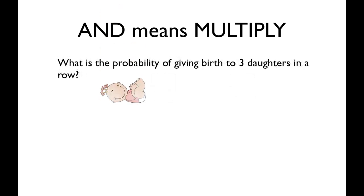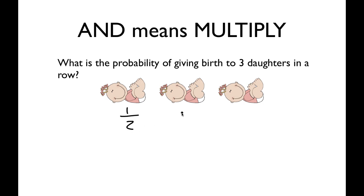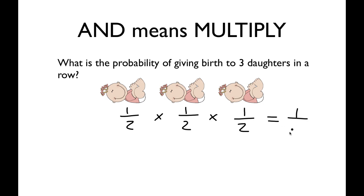What's the probability of giving birth to three daughters in a row? The gender of any child is an independent event — every child is independent in terms of what gender they'll be. The probability of giving birth to a girl is 1/2, and a girl, and a girl. Since I'm saying a girl and a girl and a girl, that becomes less and less likely. 'And' means multiply, so 1/2 times 1/2 times 1/2 — the probability of giving birth to three girls in a row is 1/8.